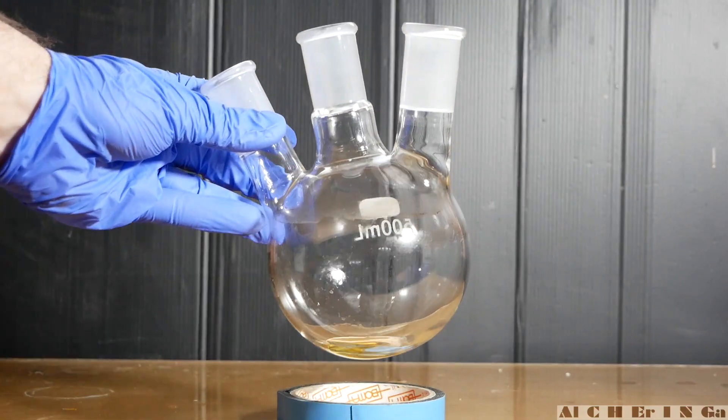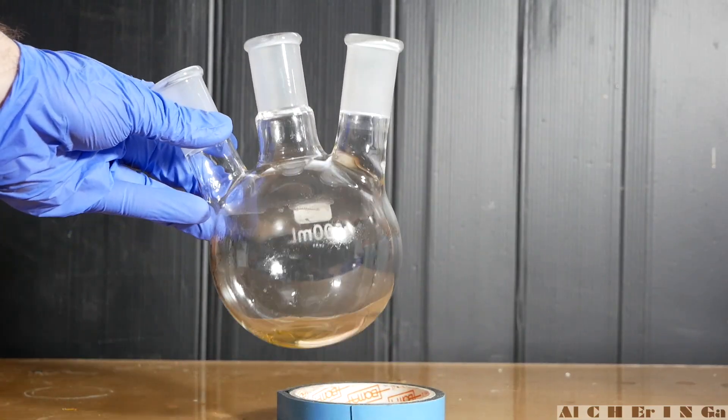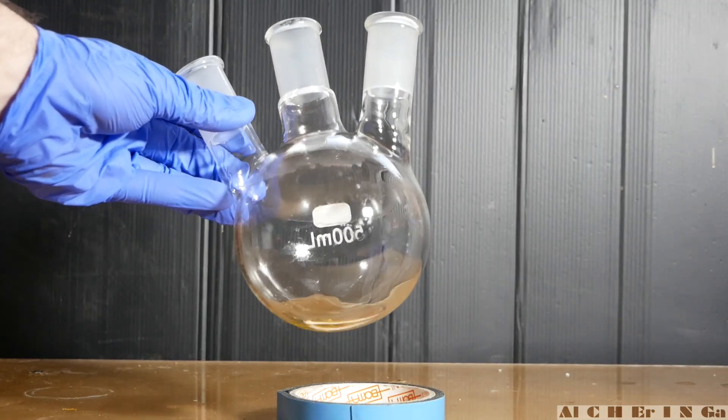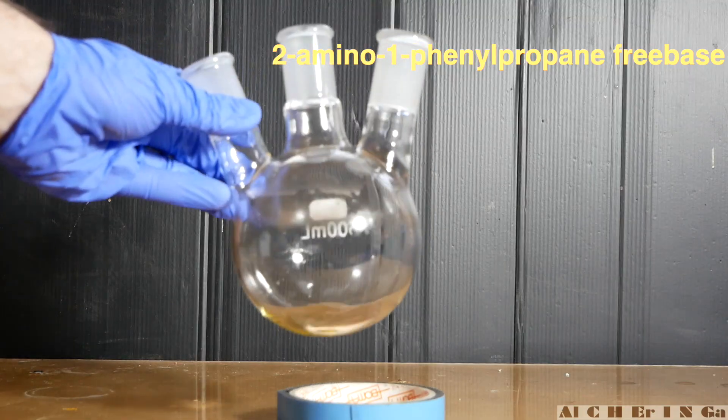Get the cleaned organic layer and remove the dichloromethane using a rotary evaporator or by distillation. As we can see, there is a yellow oil. This is 2-amino-1-phenyl-propane free base.